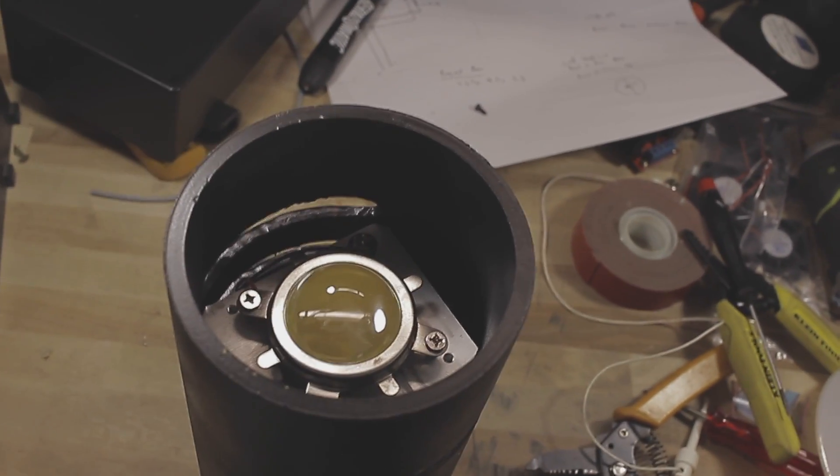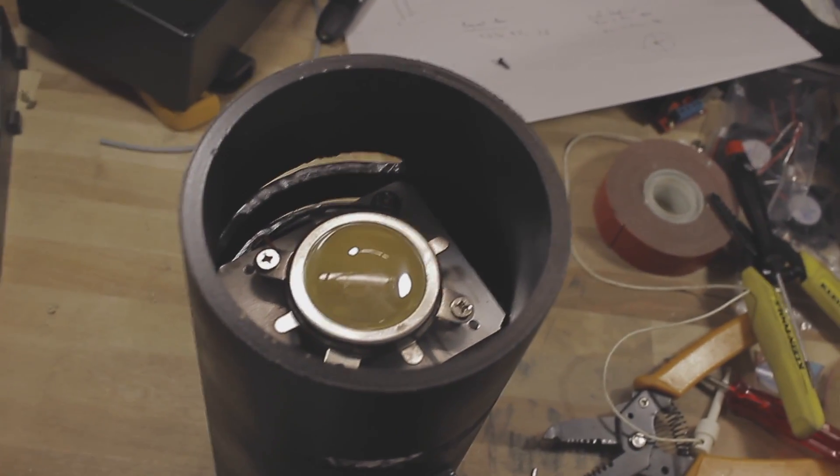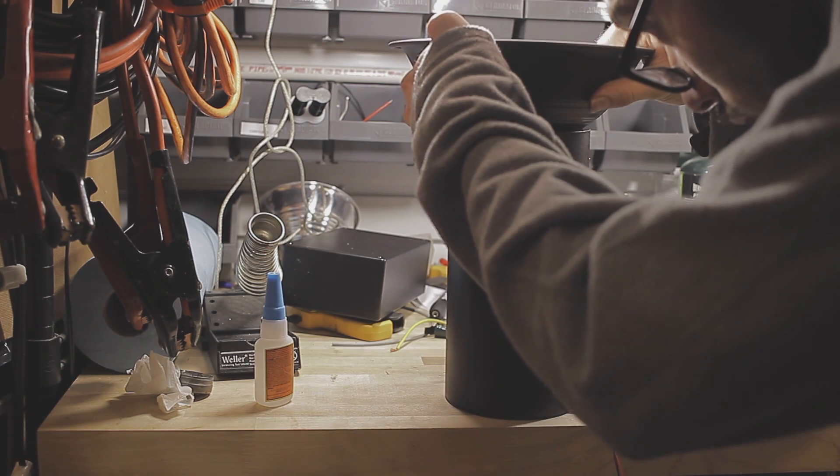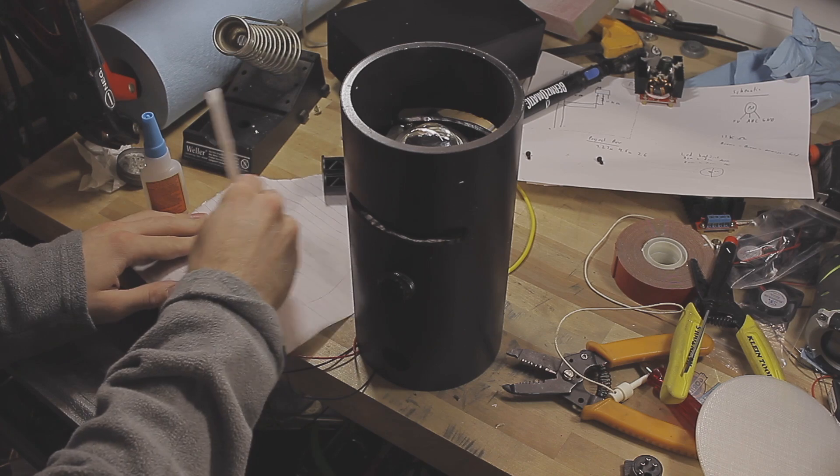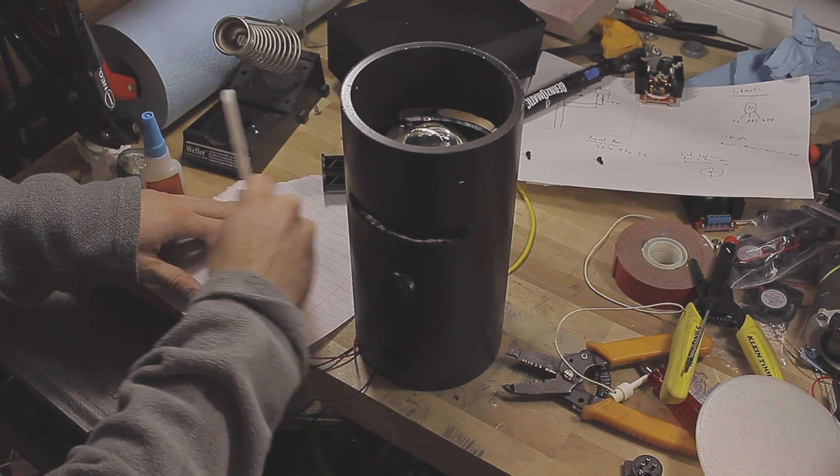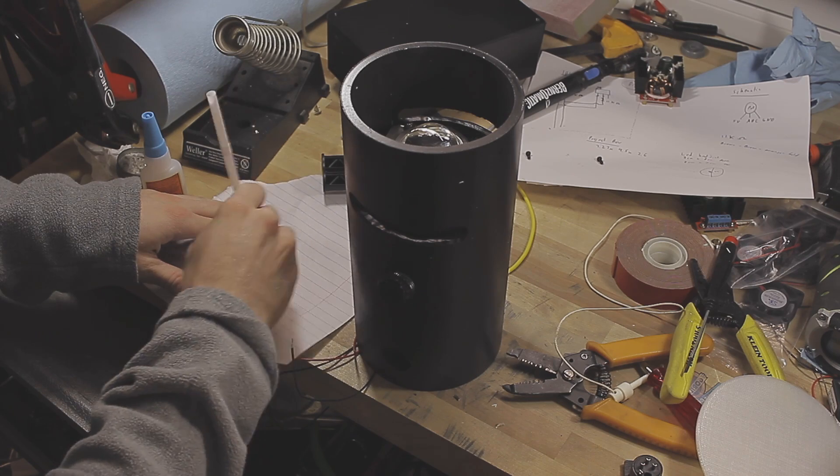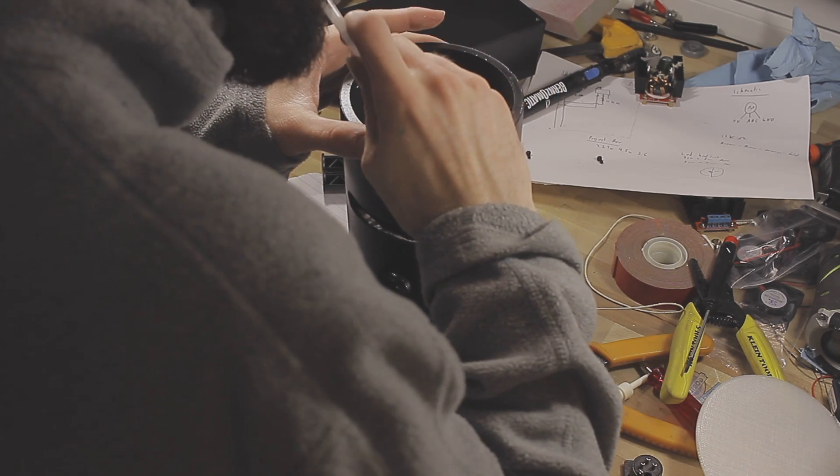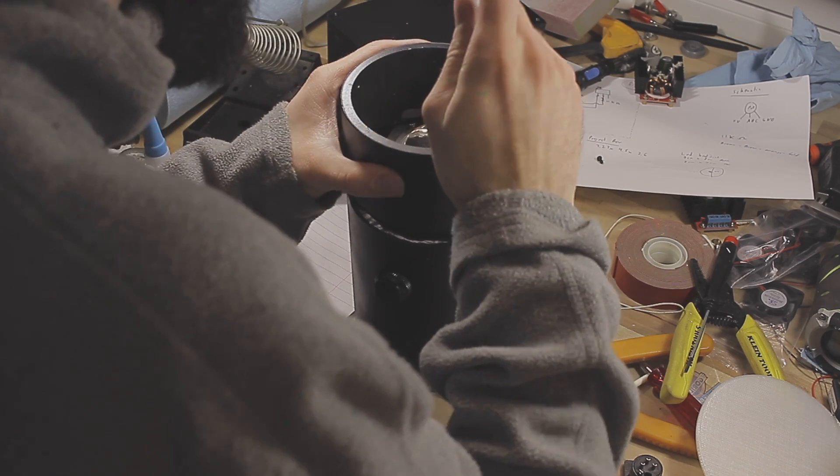Once the heatsink is placed in the PVC pipe, it should be relatively snug. Take some 5-minute epoxy and epoxy up that heatsink to the inside of the PVC pipe. Make sure you connect the PVC pipe to the heatsink as well as the fan to the heatsink, since even though they are super glued together, we want to make sure that every point is connected to the PVC pipe.